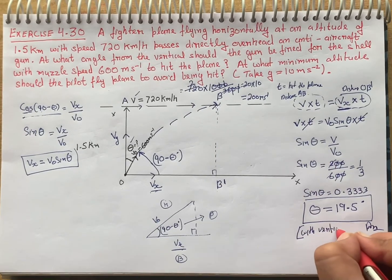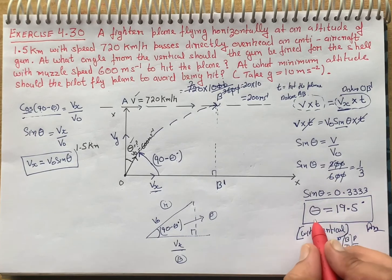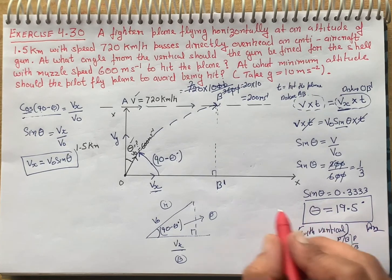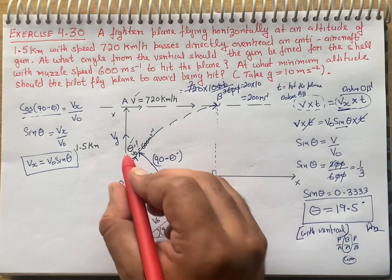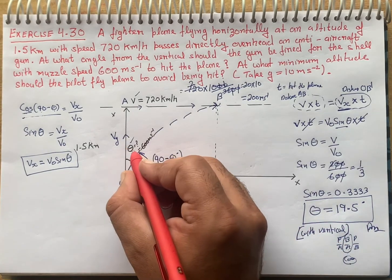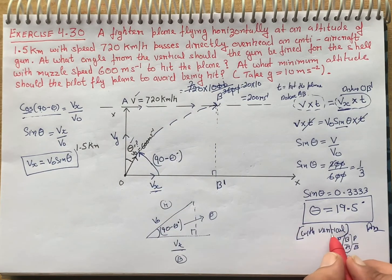This is the answer to our first part — 19.5 degrees with the vertical. It is important to mention 'with vertical' because normally we take theta with the x-axis, but this time we took theta with the y-axis, so we mention 'with vertical axis'.